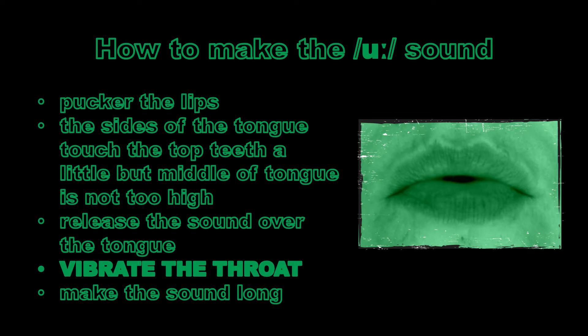What's happening inside the mouth when we make the oo sound is that the sides of the tongue press against the top teeth, because we're contracting the mouth a bit. But the middle of the tongue isn't too high — it's not pressed up against the top of the mouth. We need there to be some space for us to release the sound through.